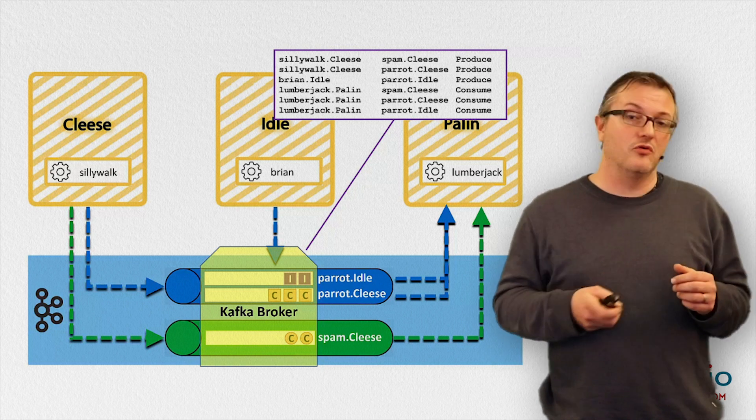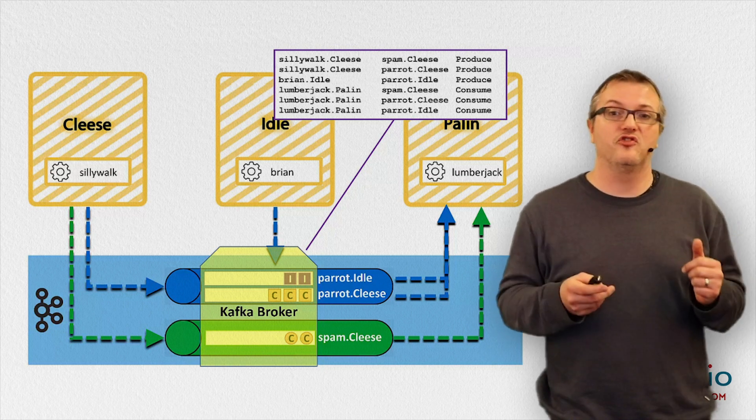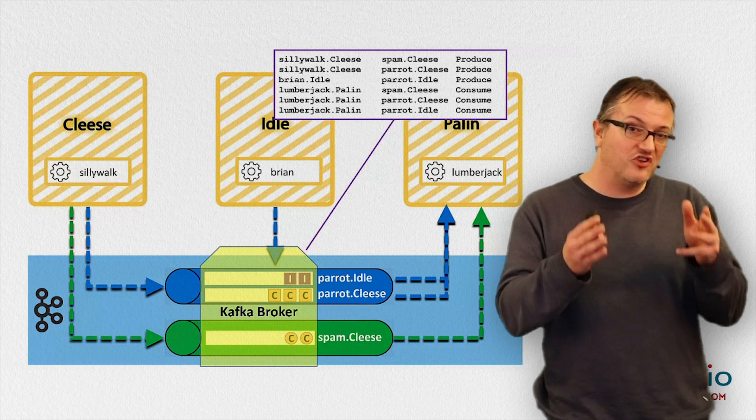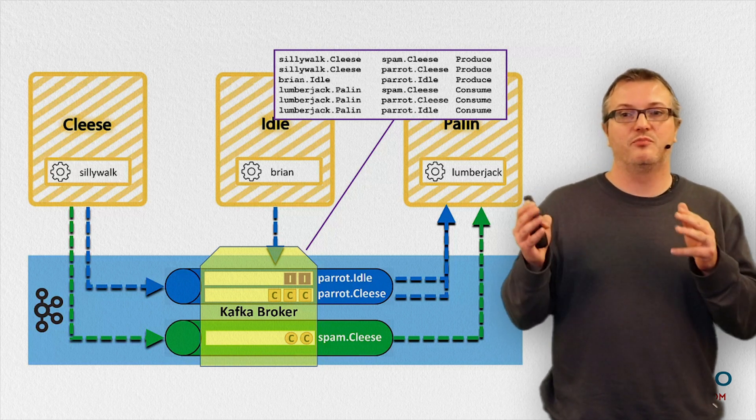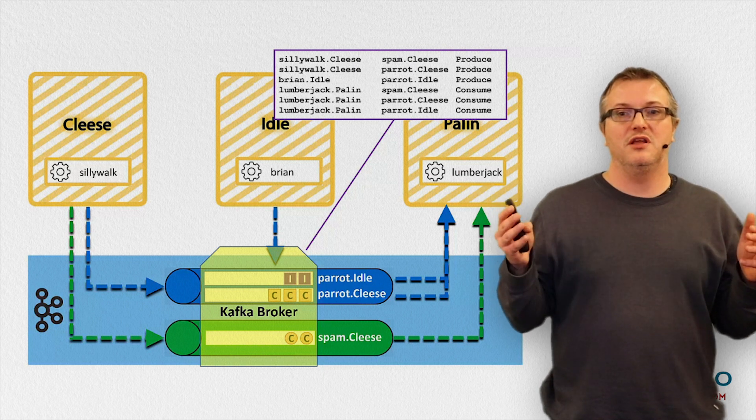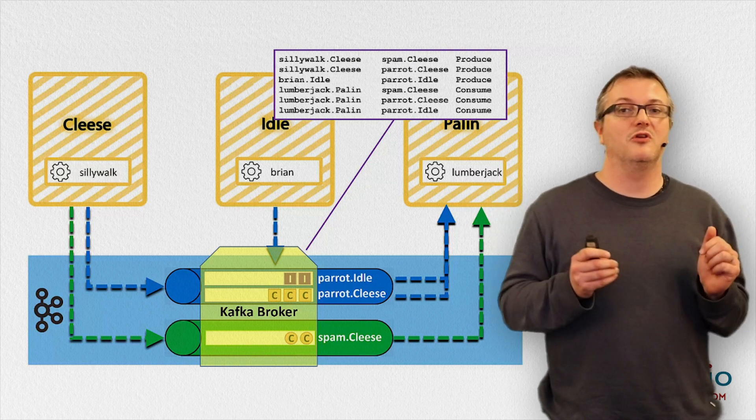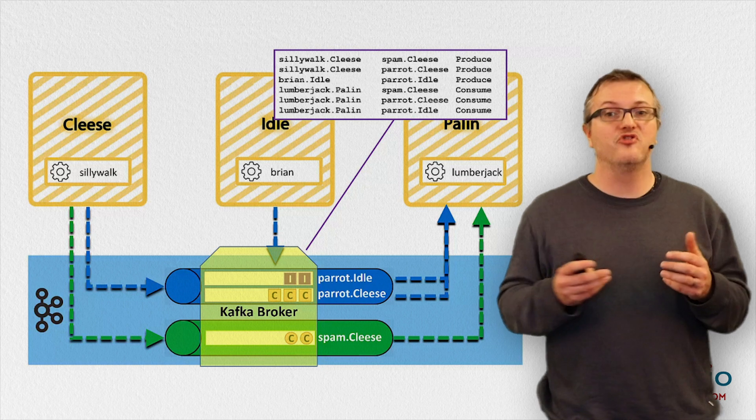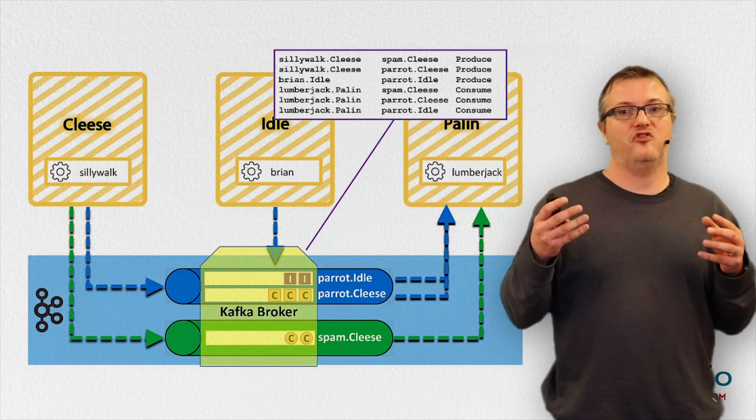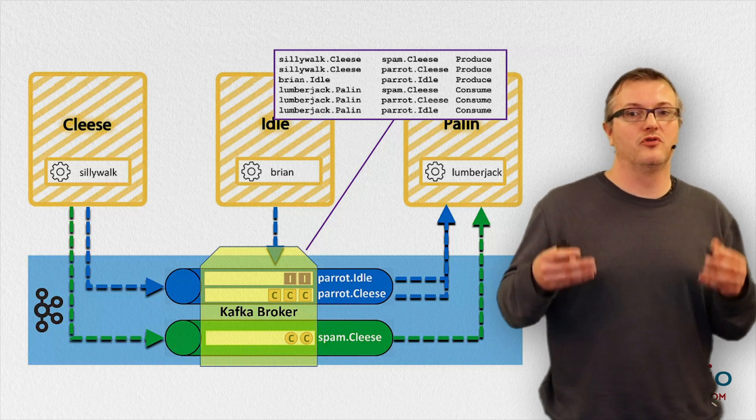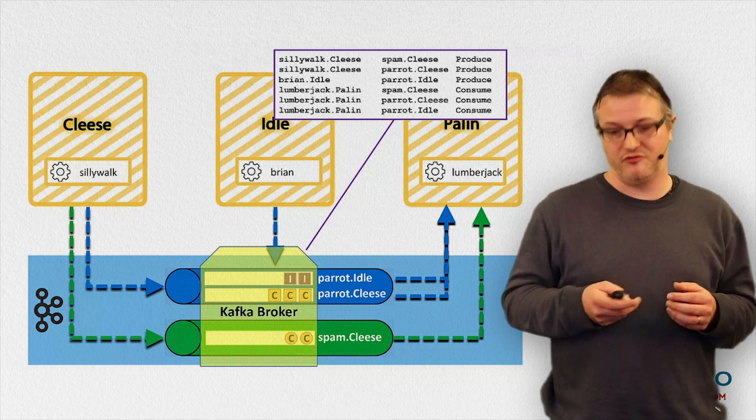So in this concrete case, the ACL states, for example, that the container silly walk or the application silly walk of tenant.cleese has produce rights on the spam.cleese and parrot.cleese topics, whereas the lumberjack container in the palin tenant has consume rights on all three concrete Kafka topics that we have.